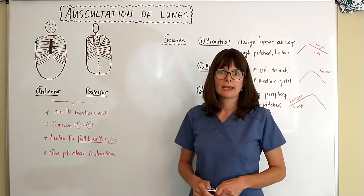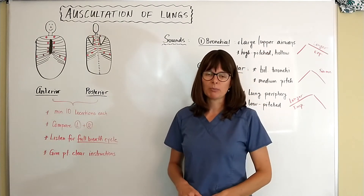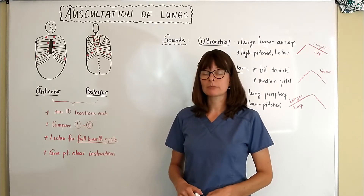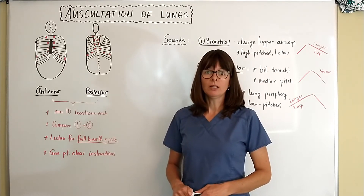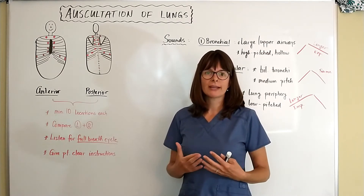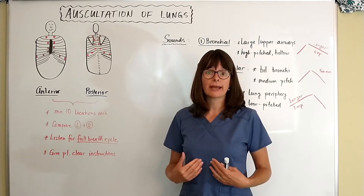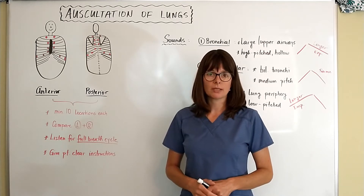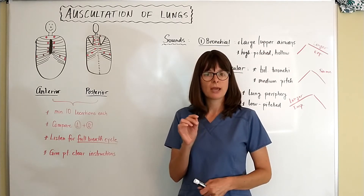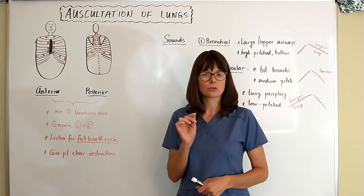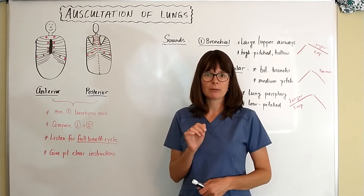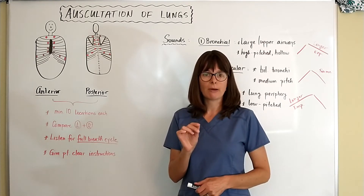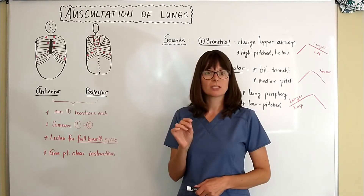It's also very important to give the patient clear instructions. Patients sometimes try to help and breathe in and out through their mouth making sounds, which makes it impossible to detect if their lungs sound abnormal because they're making those sounds with the voice box. What I recommend is that you tell the patient: 'I'm going to place my stethoscope on your chest in different locations to listen to your lungs. Every time I place my stethoscope on your chest, please inhale through the nose and exhale through the mouth, taking slow deep breaths.'